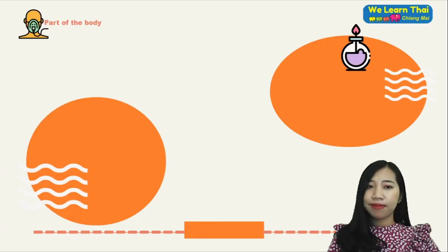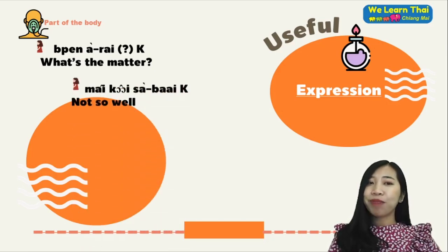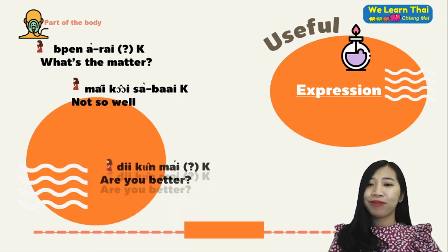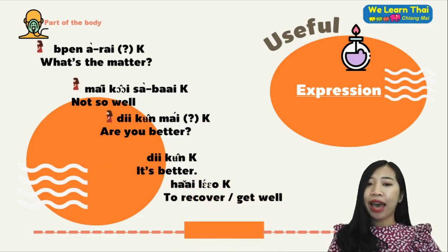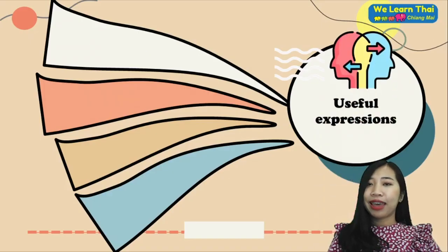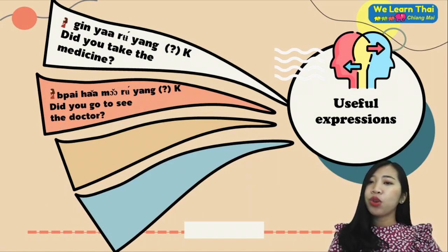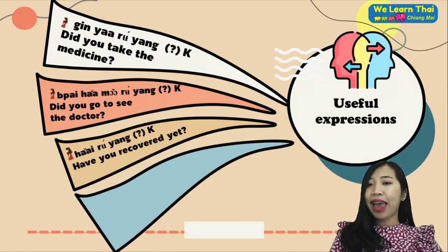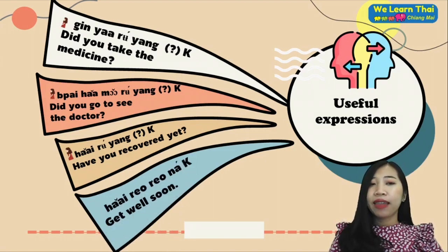For useful expressions: เป็นอะไรไหม (What's the matter? / What's wrong with you?). ดีฉันไม่ค่อยสบายค่ะ (I'm not so well). คุณดีขึ้นไหมค่ะ (Are you better?). ดีขึ้นค่ะ (It's better). หายแล้วค่ะ (Recovered / get well). คุณกินยารึยังค่ะ (Did you take the medicine?). ไปหาหมอรึยังค่ะ (Did you go to see the doctor?). คุณหายรึยังค่ะ (Have you recovered yet?).